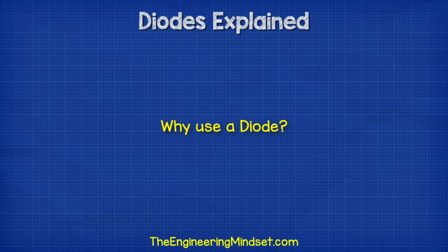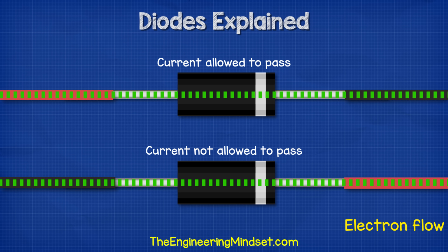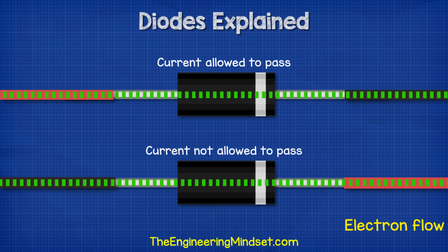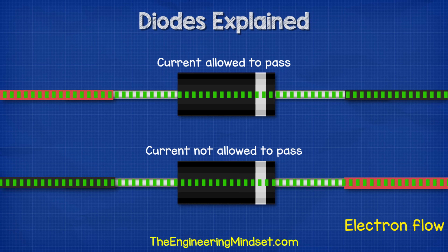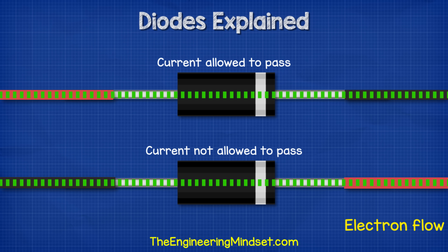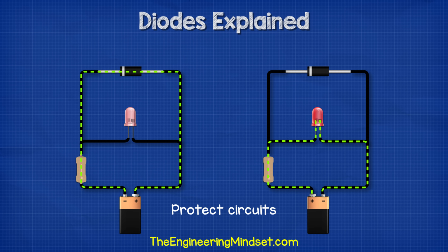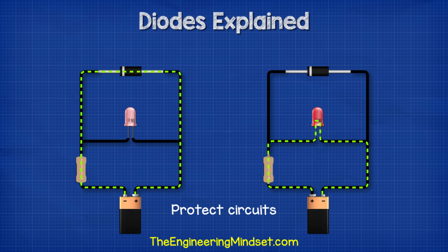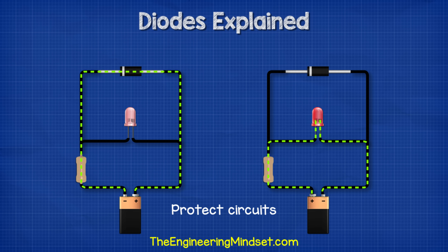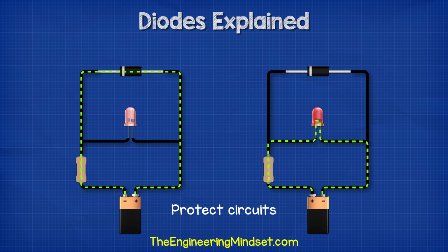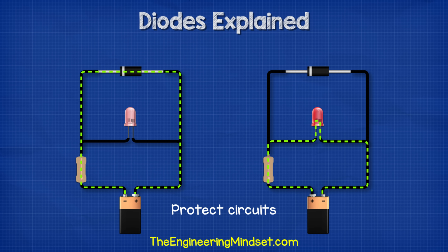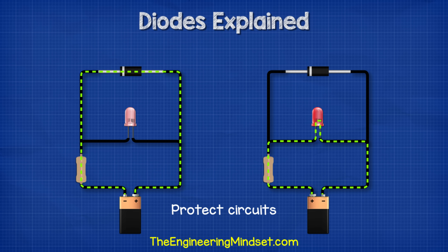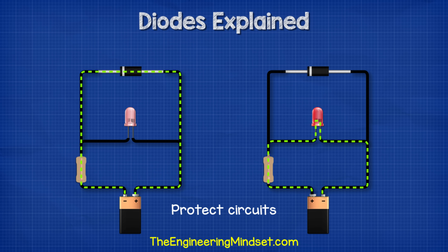So why do we use diodes? We use them to control the direction of current flow in a circuit. That's useful for example to protect our circuit if the power supply was connected back to front — the diode can block the current and keep our components safe.